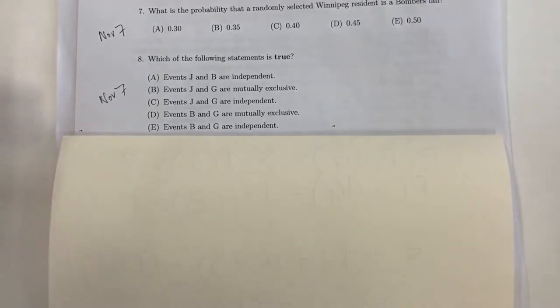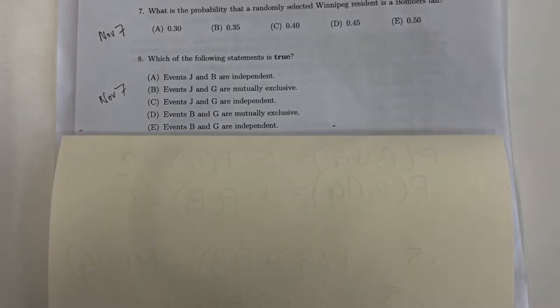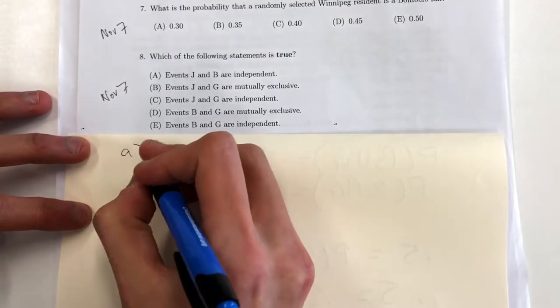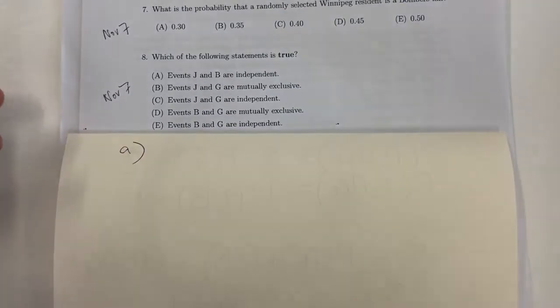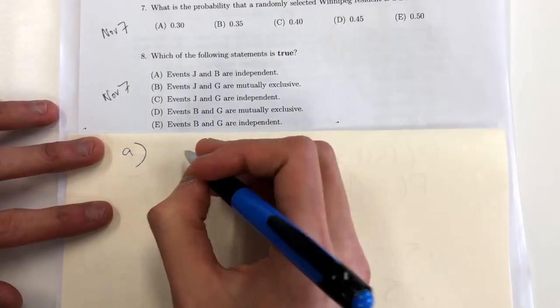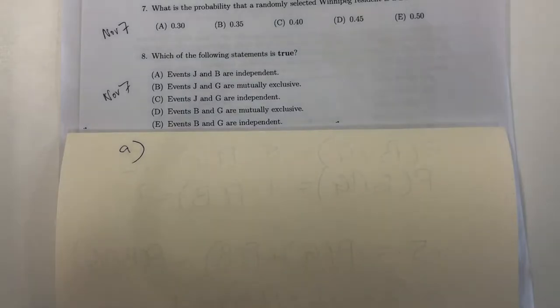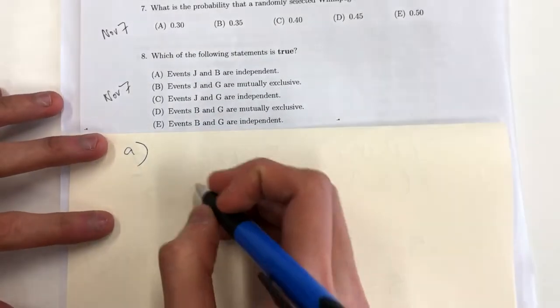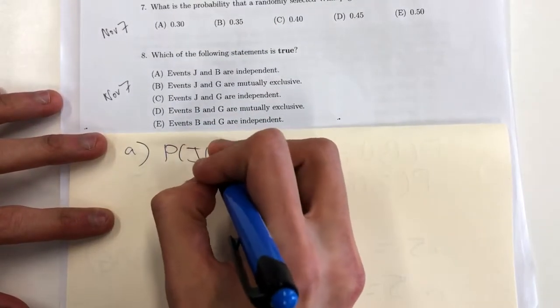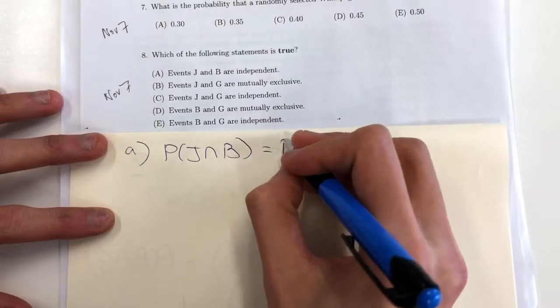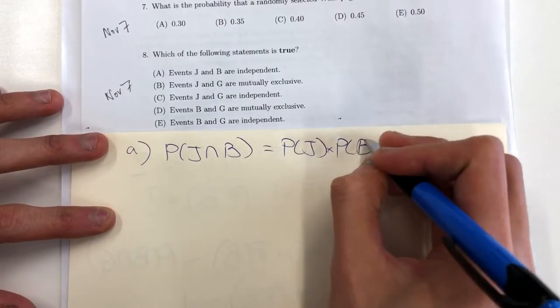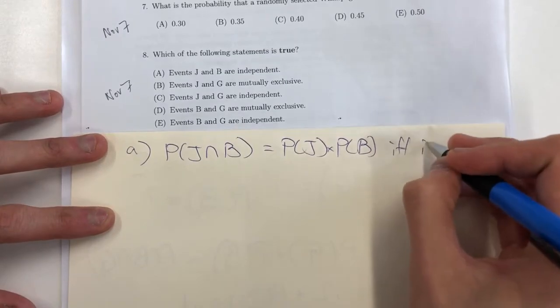So for questions like these, we should check out each letter and see whether or not it is true or false. So letter A, events J and B are independent. Recall that if two events are independent, their intersection will be the product of their individual probabilities. So P(J∩B) will equal P(J) times P(B) if and only if they're independent.